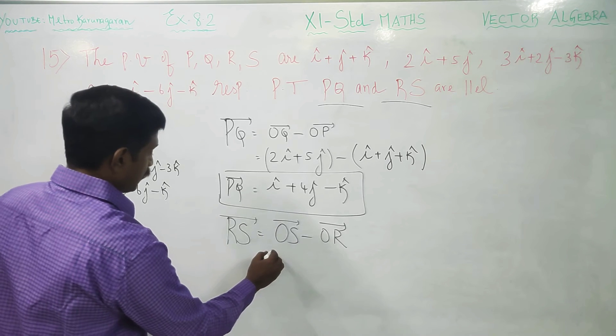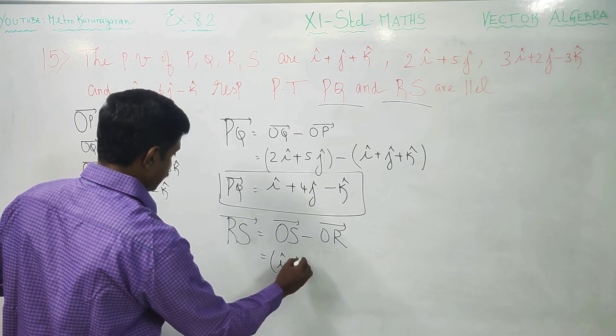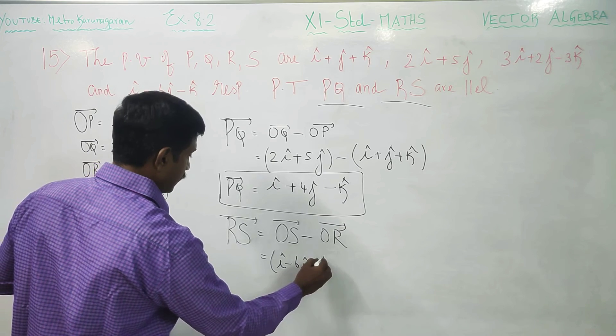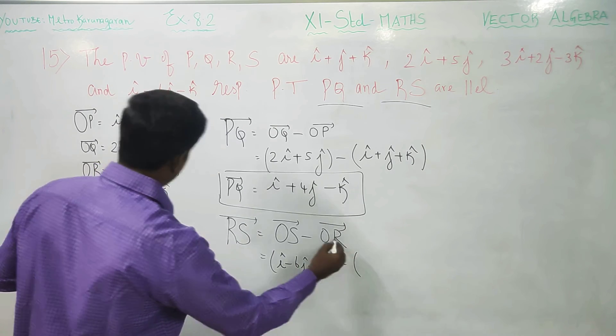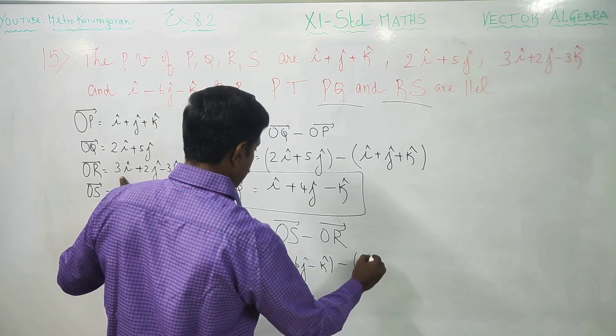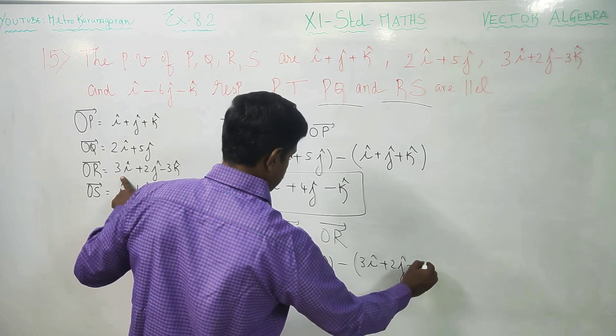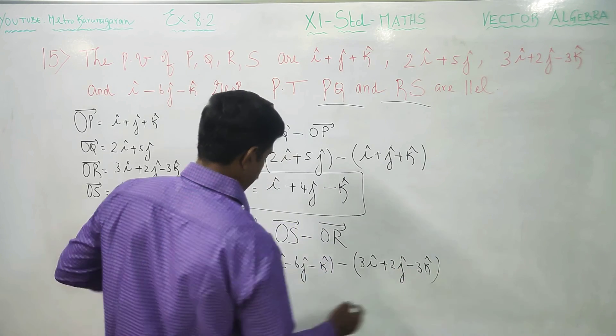What is my OS vector? OS is I vector minus 6J vector minus K vector minus OR vector, OR 3I, 3I plus 2J, 2J minus 3K, 3K.